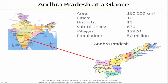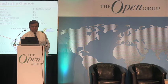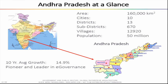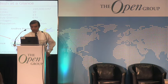Andhra Pradesh is located in southeastern India. The state itself is 160,000 square kilometers, with 10 cities with a population greater than 1 million, 13 districts, 670 sub-districts, 12,920 villages, and a population of 50 million — about the size of a country in Europe. The state has grown at an average of about 15 percent GDP growth over the last 10 years, making it a high-growth state and a leader in e-governance, which is why it was the first state to think of enterprise architecture.